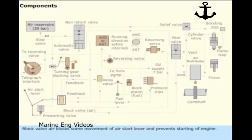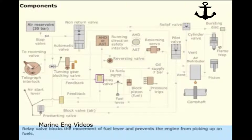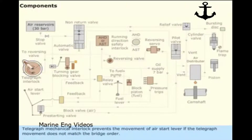Block valve air blocks movement of the air start lever and prevents starting of the engine. A relay valve blocks the movement of the fuel lever and prevents the engine from picking up on fuel. The telegraph mechanical interlock prevents movement of the air start lever if the telegraph movement does not match the bridge order.